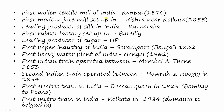The first woolen textile mill of India was established in Kanpur in 1876. The first modern jute mill was set up in Rishra, near Kolkata, in 1855. The leading producer of silk in India is Karnataka. The first rubber factory was set up in Bareilly. The leading producer of sugar is Uttar Pradesh.